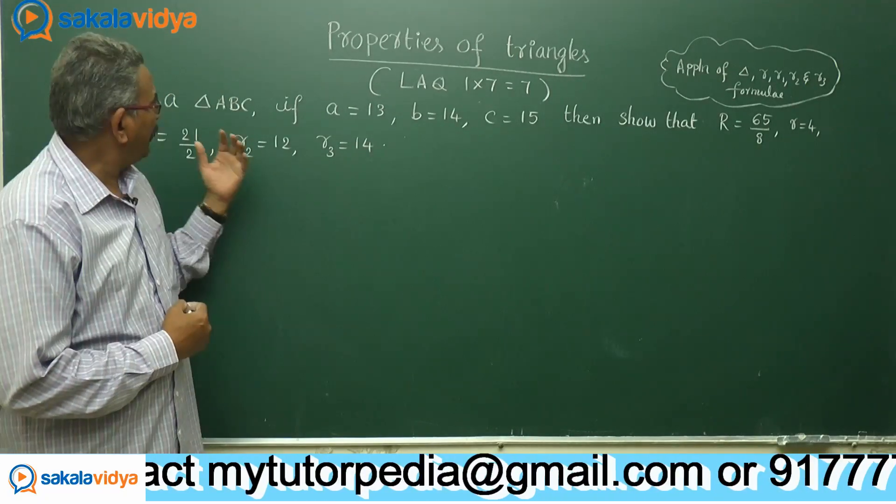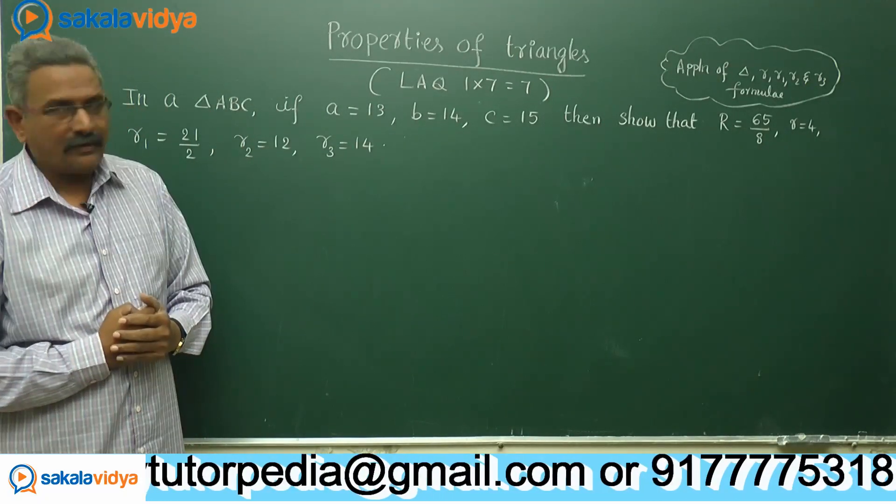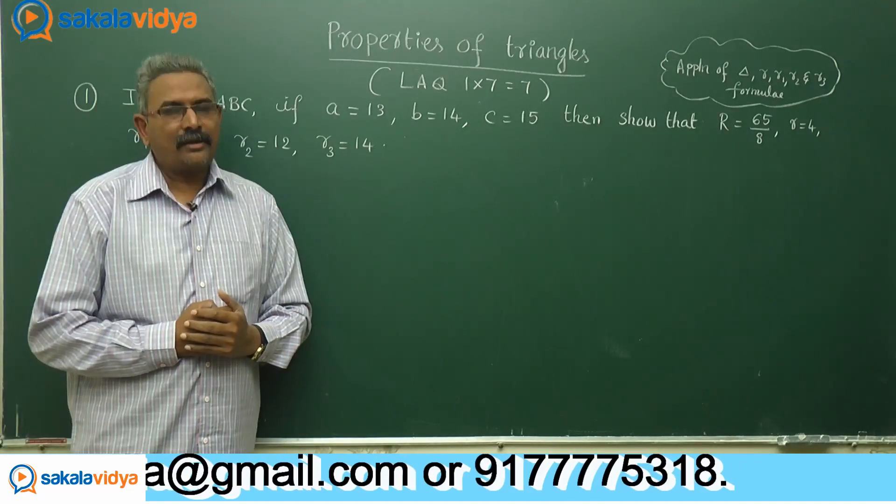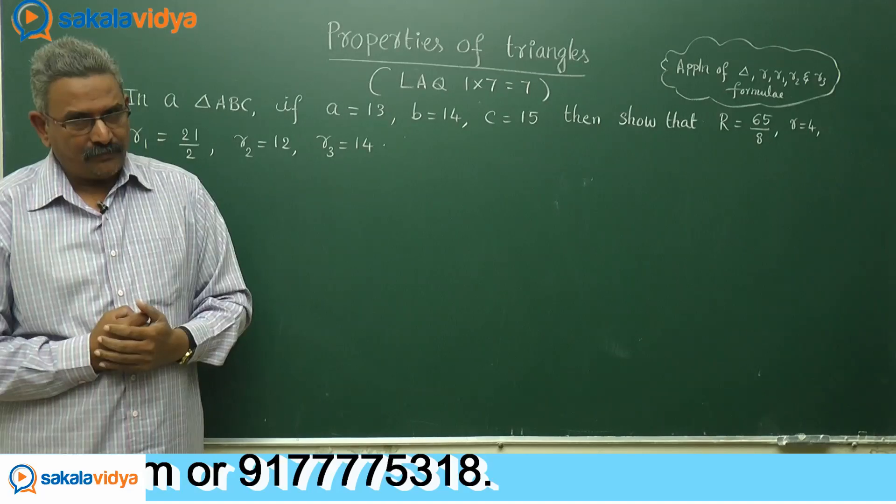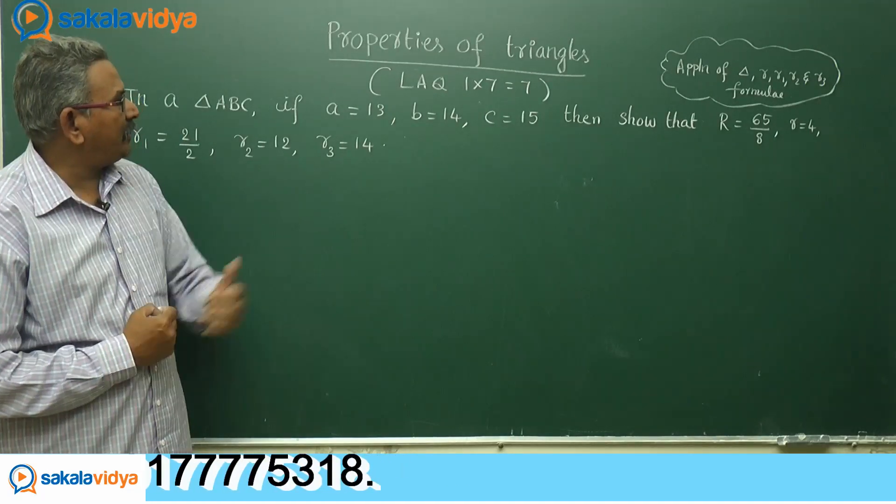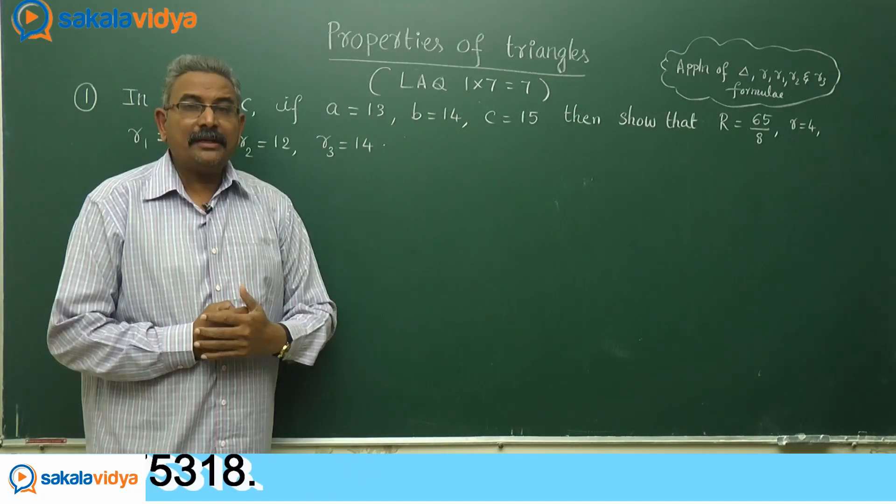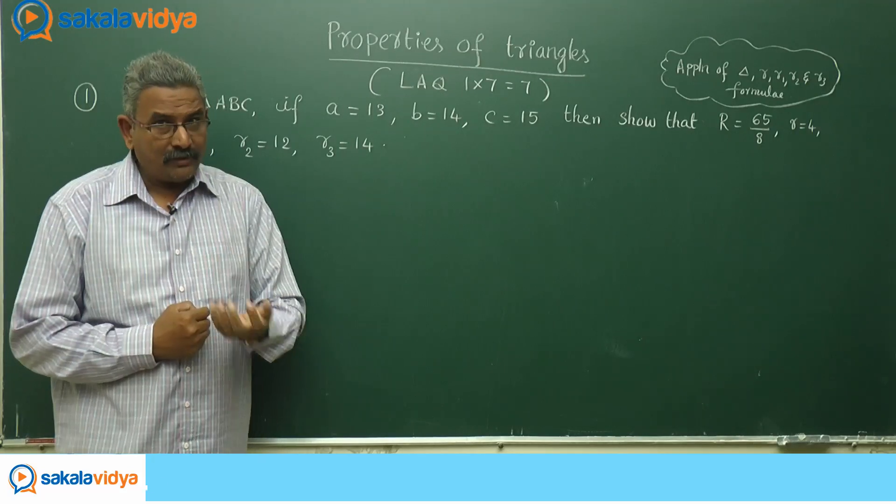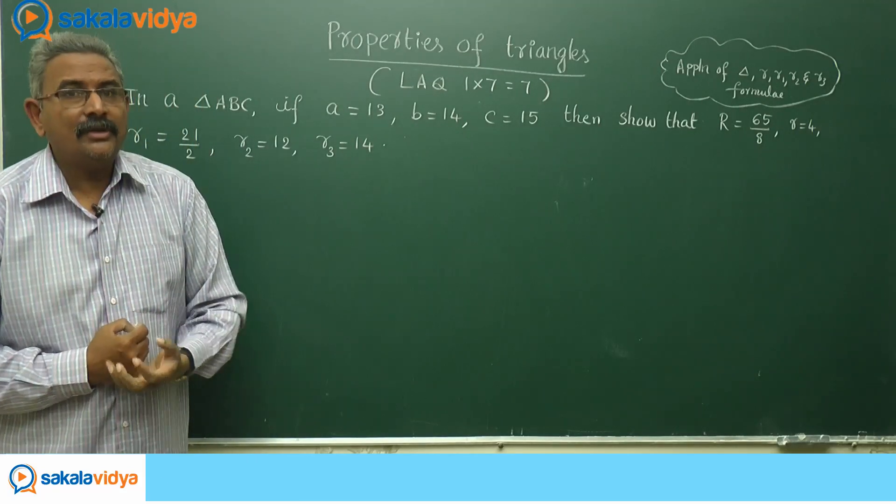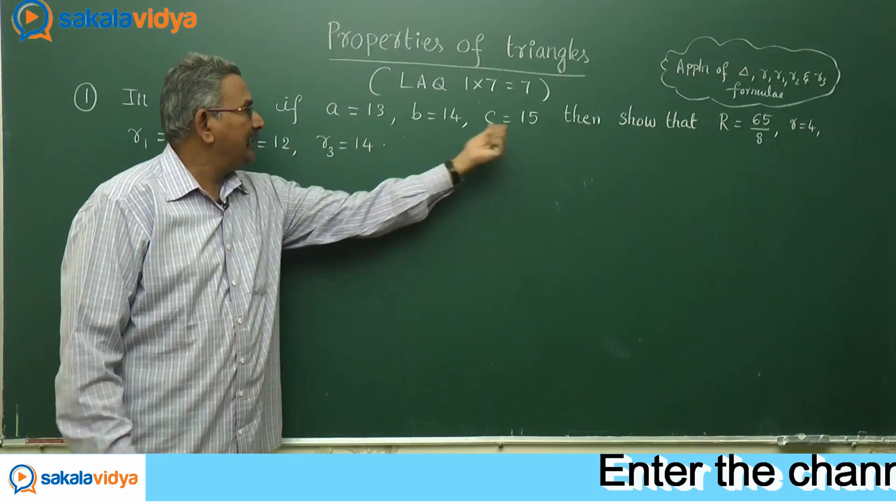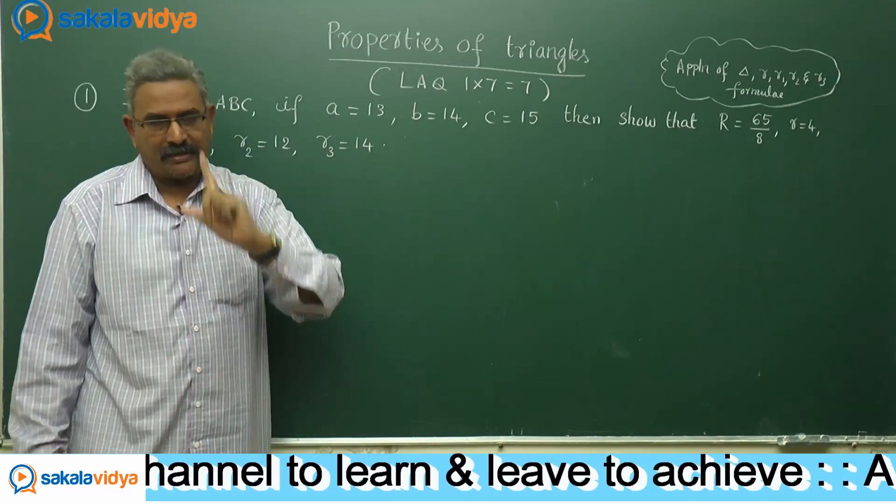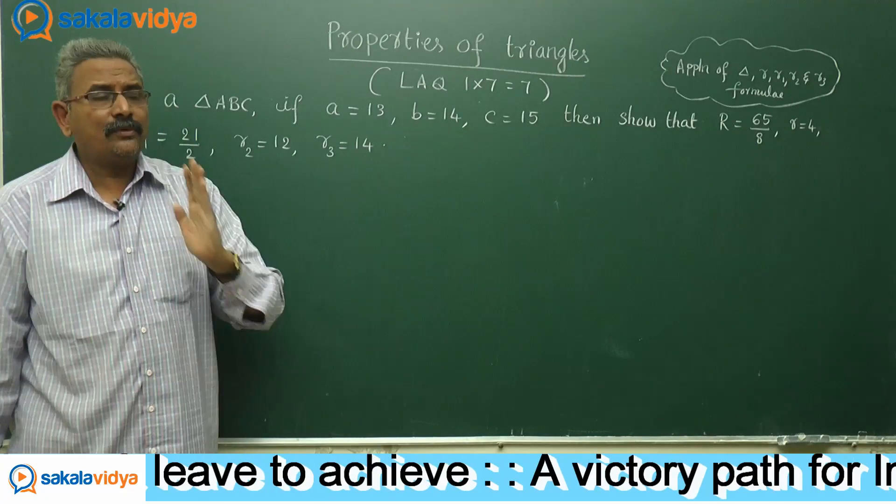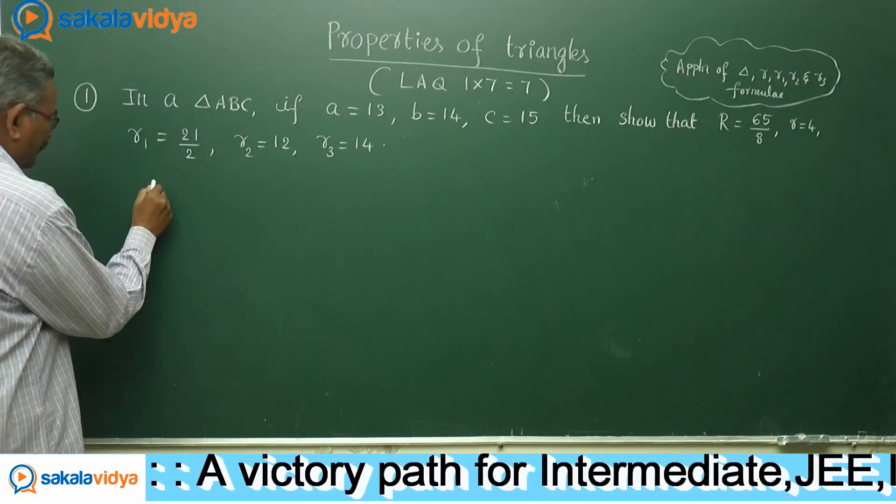In order to find out this, first of all, we need to recall here Heron's formula. Heron's formula means to find out delta value. Delta value can be obtained using A, B, C. But in order to find out delta, we need to find out S value also, that is semi-perimeter. Add these three values, we get 2S. We have to find out S, that is the first step.